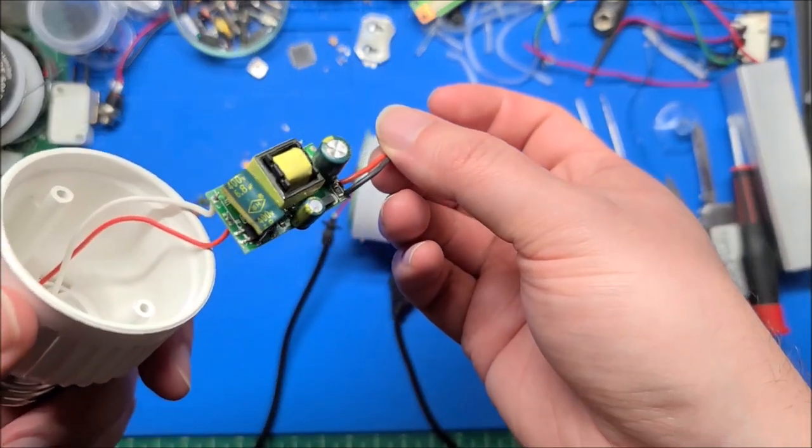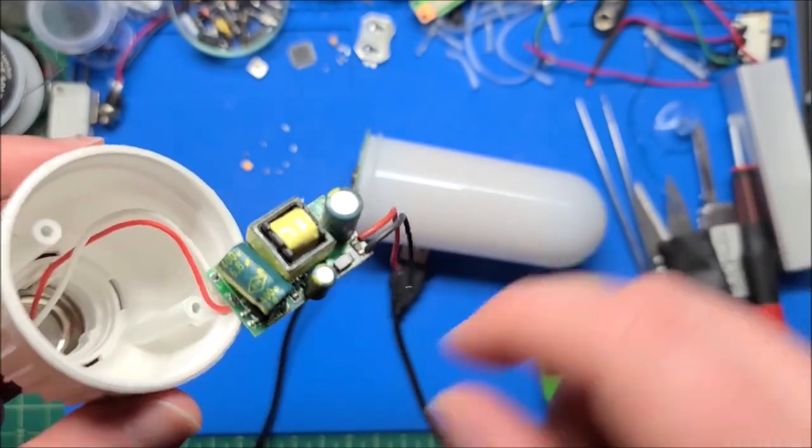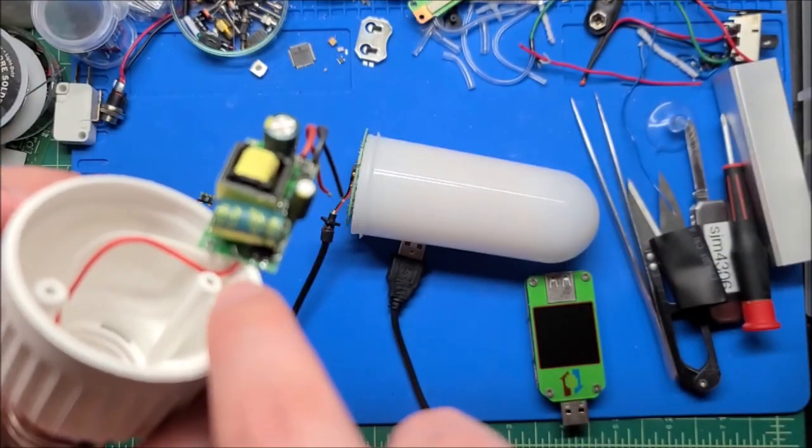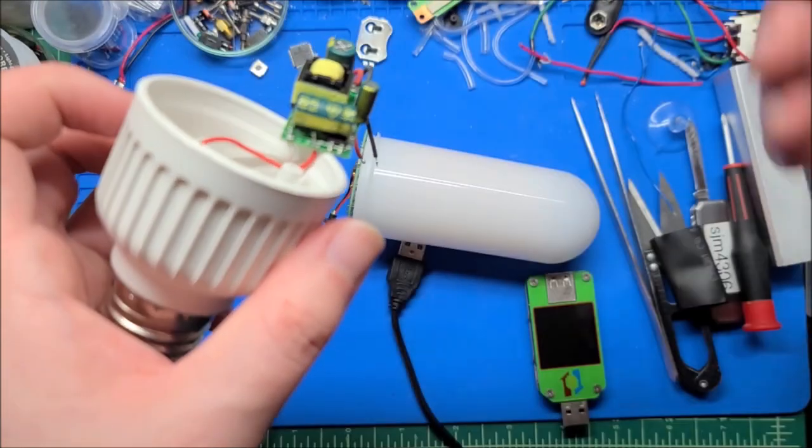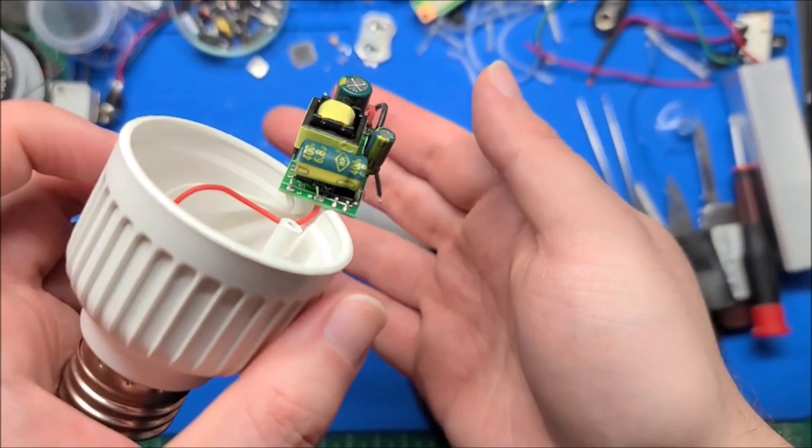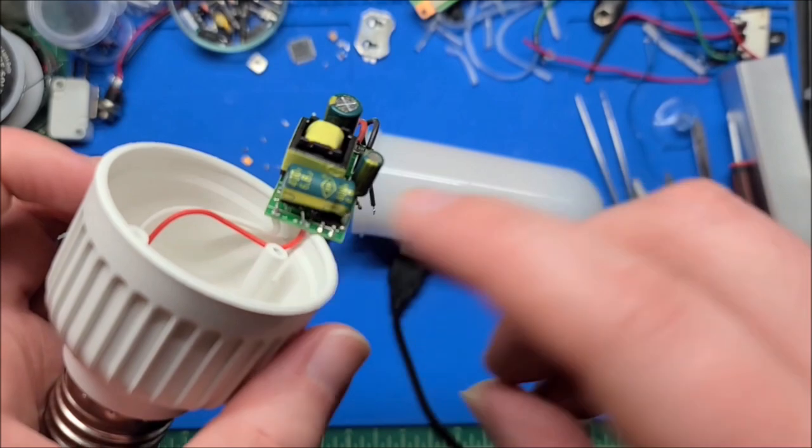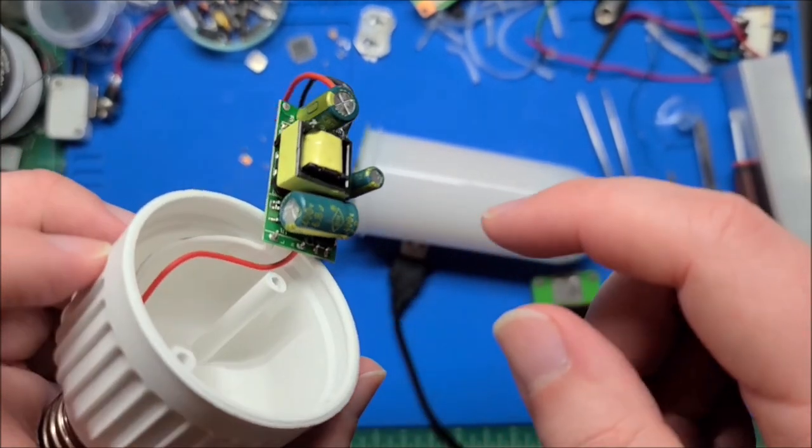Yeah, so we have a 400 volt, 6.8 microfarad DC link cap there. There's a bridge rectifier right underneath it. Those leads are actually kind of awfully long. I'm not sure how I feel about that. Let me, there we go. Get the focus on there. Yeah. And the soldering looks pretty bad on the neutral. The live is probably okay, but they definitely should have trimmed that.